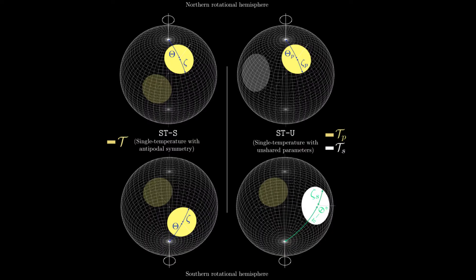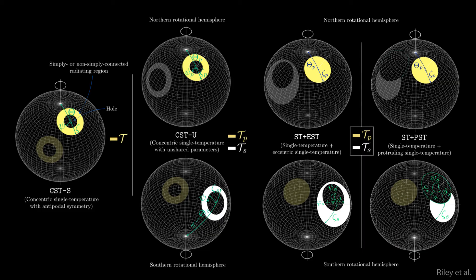The other model, called STU, endows the hot regions with distinct parameters and relaxes the prior support for the geometric configuration of the hotspots. This model outperformed the STS model, but was deemed inferior to the other higher complexity models.